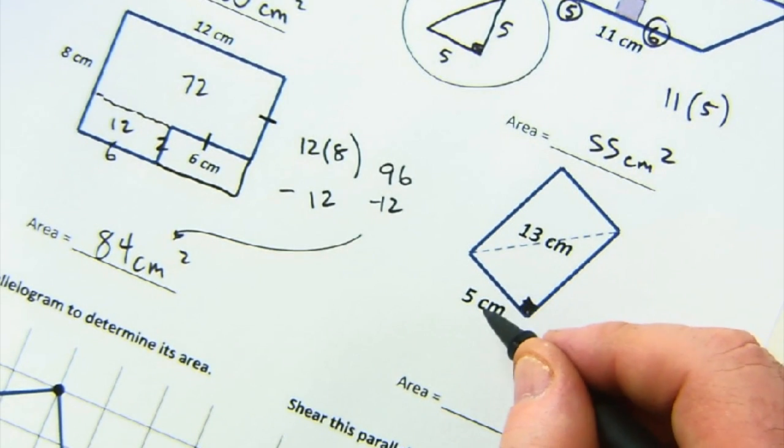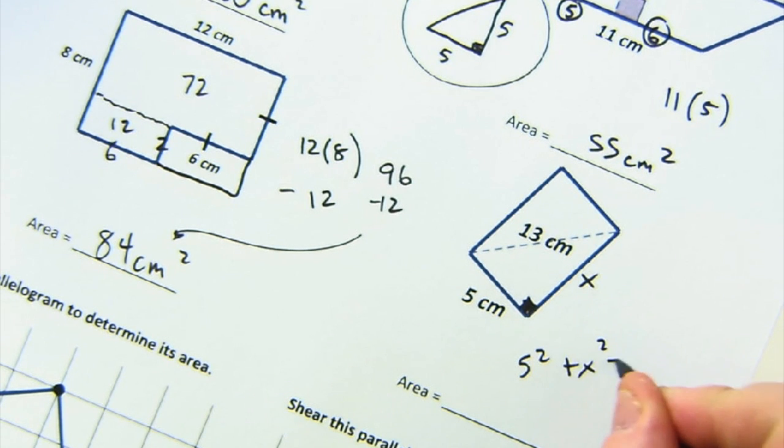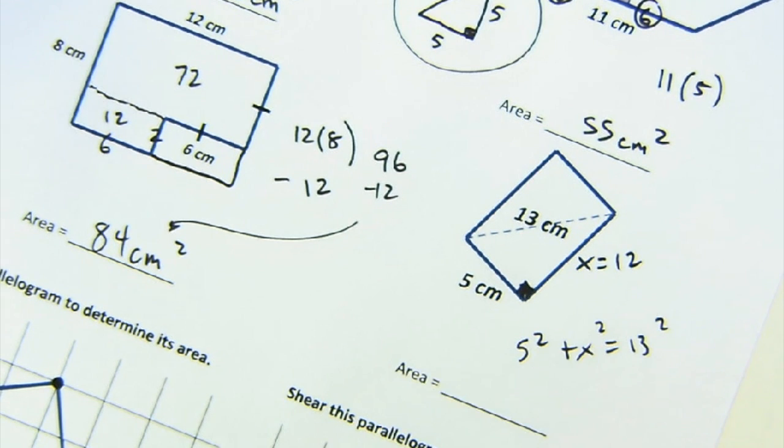5 squared plus x squared equals 13 squared. And when we solve that, we would get 12 there. And so it's 5 times 12 is 60 centimeters.